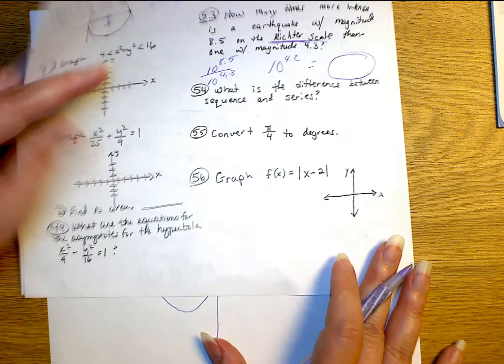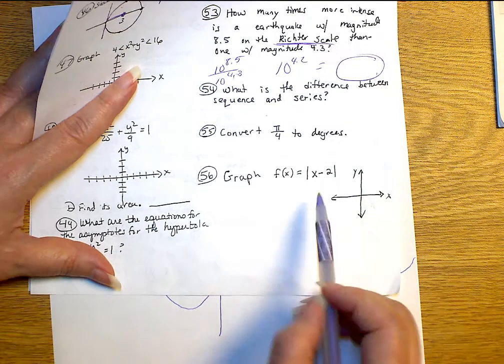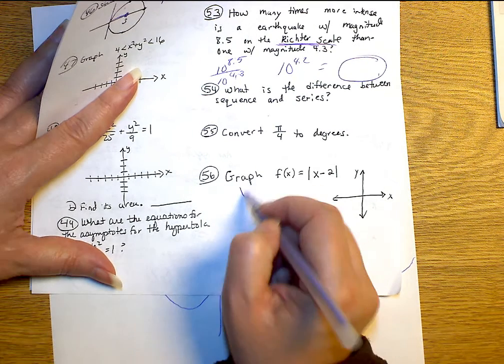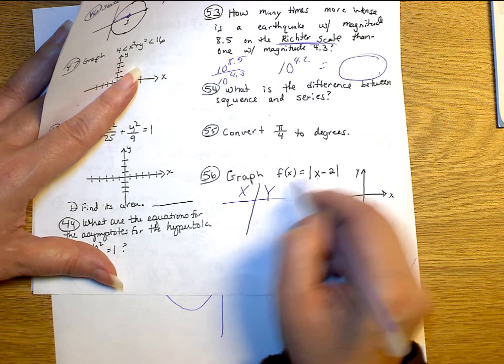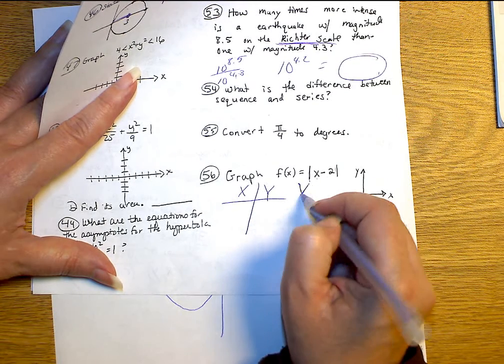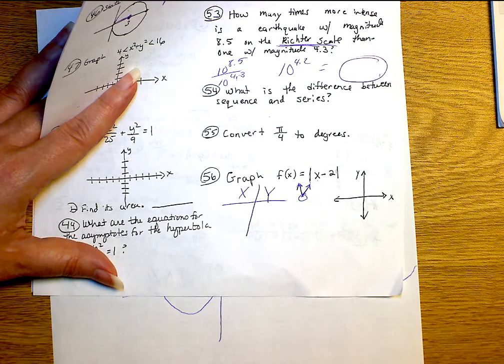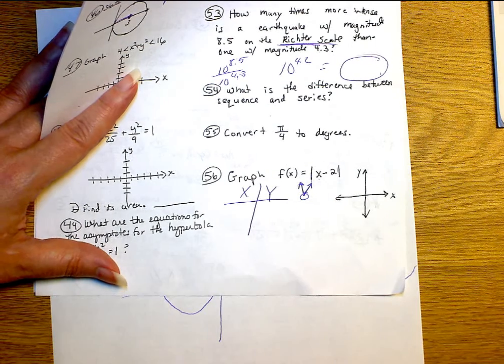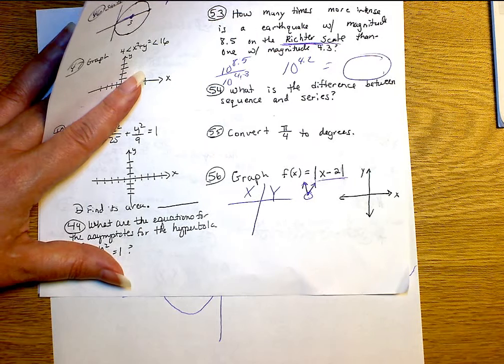And the last one I'm going to talk about, unless you guys have specific questions, is 56. 56, what you have to do is the first thing you want to do is to know that absolute values looks like a V. But you really need to know where this vertex is. So remember, its vertex is wherever it makes 0. So what would make that 0?